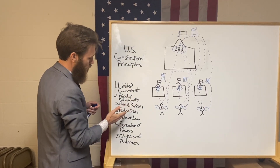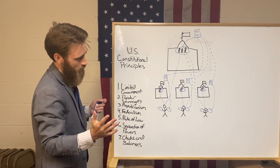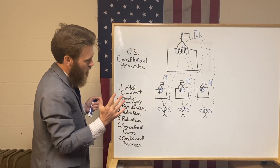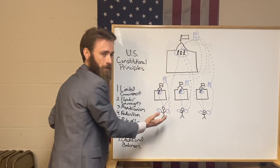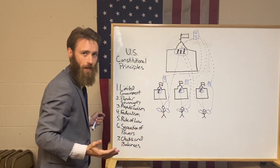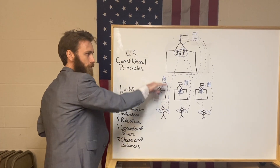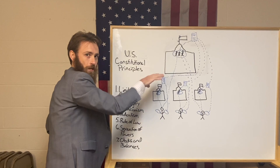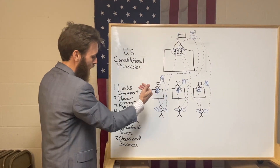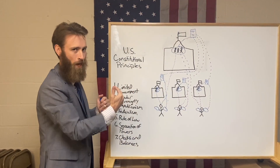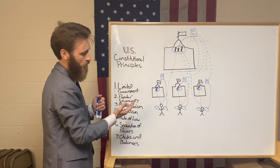The fourth principle is federalism — simply the idea that we have multiple governments over us at the same time, at multiple different levels. We have a federal government and we have a state government, and they share power. This is something that's often misunderstood.